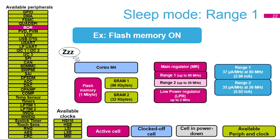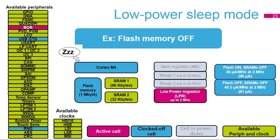In sleep mode, the CPU clocks are off. In range 1, the system clock is up to 80 MHz; in range 2, it is up to 26 MHz. The SRAM 1 and SRAM 2 clocks are enabled by default and can be gated off during sleep mode by software. The sleep mode consumption is 37 microamps per MHz in range 1 at 80 MHz with flash memory on. In low-power sleep mode, the CPU clocks are off and the logic is supplied by the low-power regulator. The system clock is up to 2 MHz. Flash memory can be configured in power-down and gated off. The low-power sleep mode consumption is 40 microamps per MHz at 2 MHz with flash memory and SRAM off.